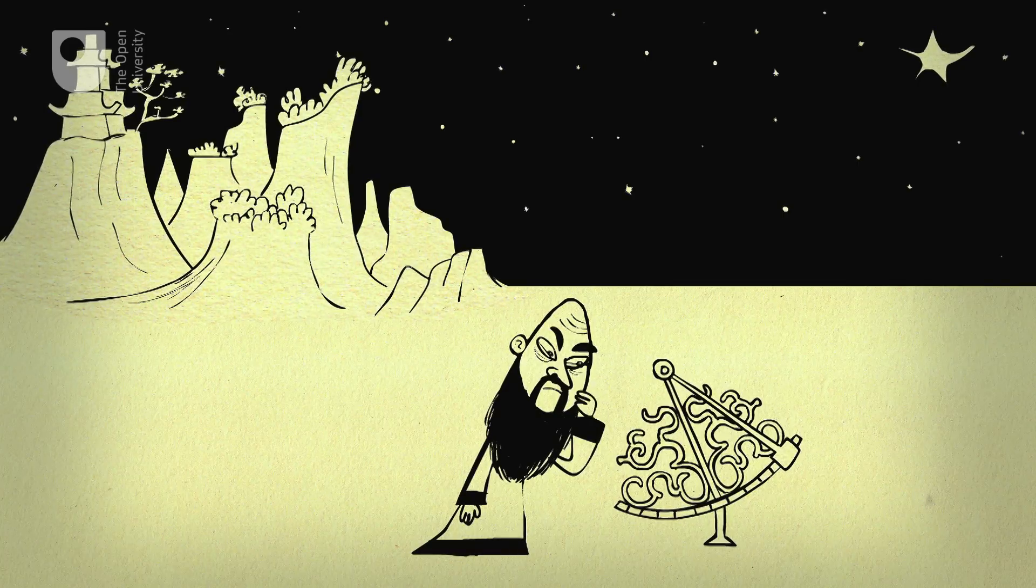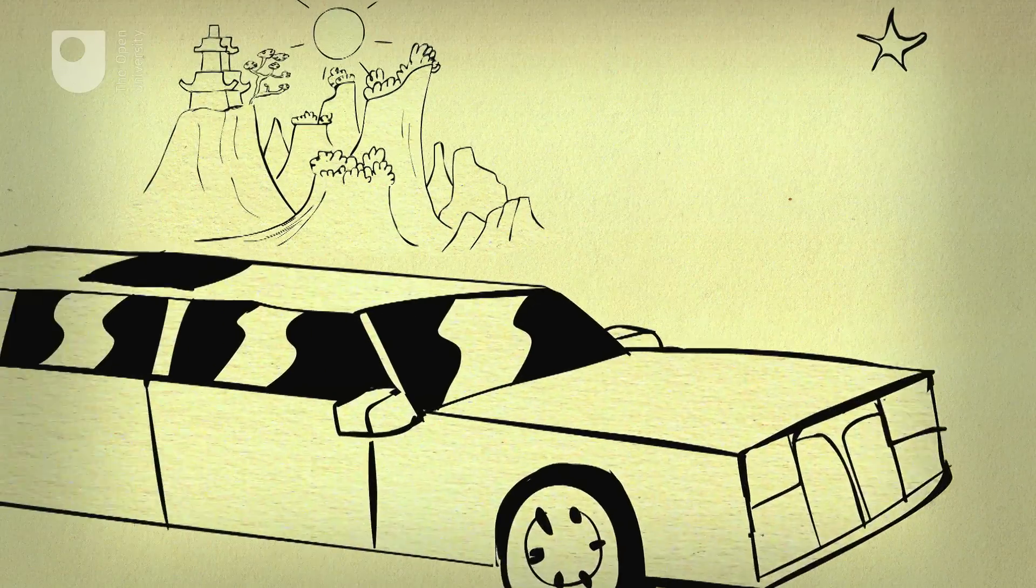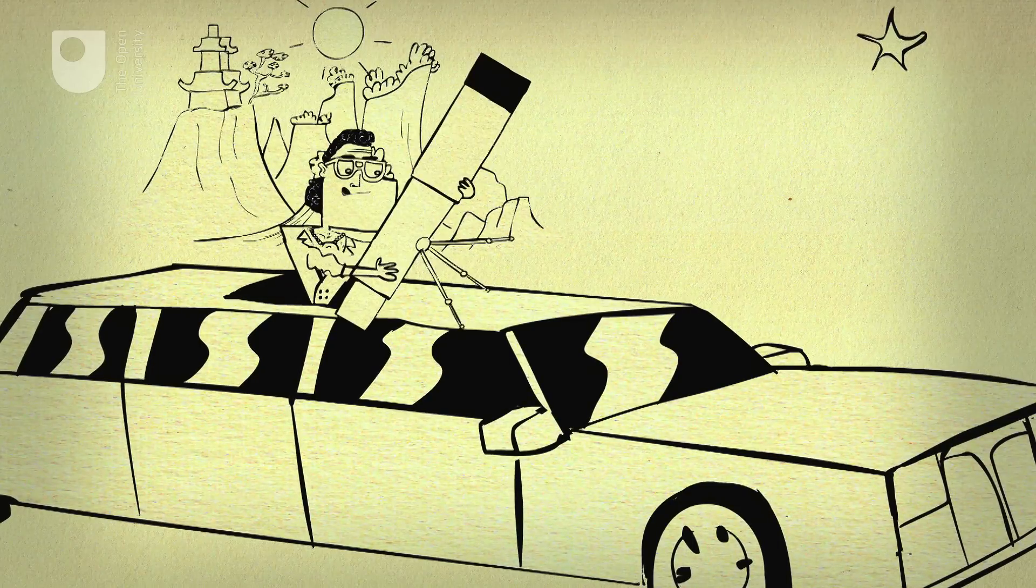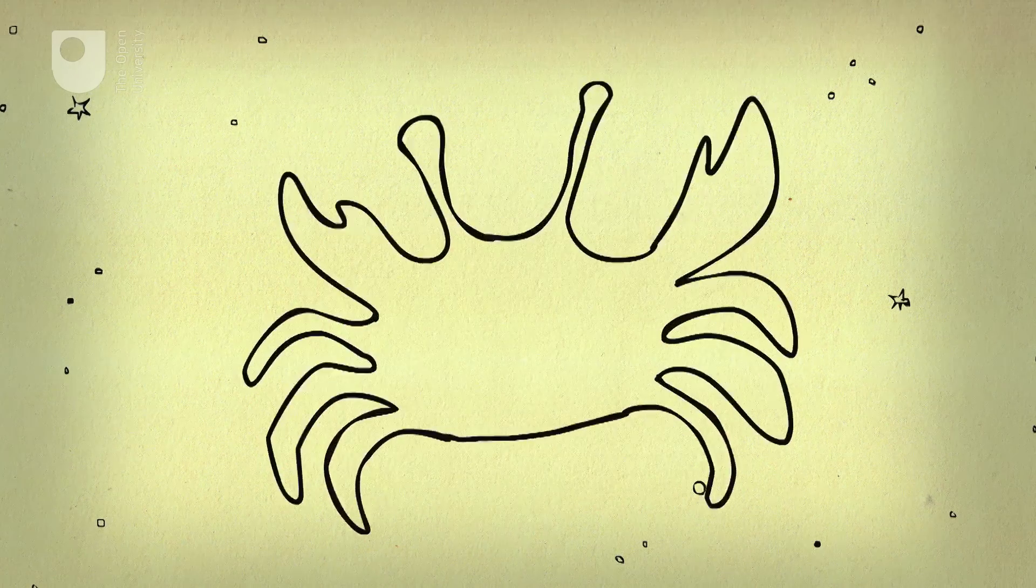In 1054 CE, Chinese astronomers spotted one so bright they could see it in daylight. Today you can still see a cloud of gas and dust from the same explosion, and because a drawing of it looked like a crab, it was called the Crab Nebula.